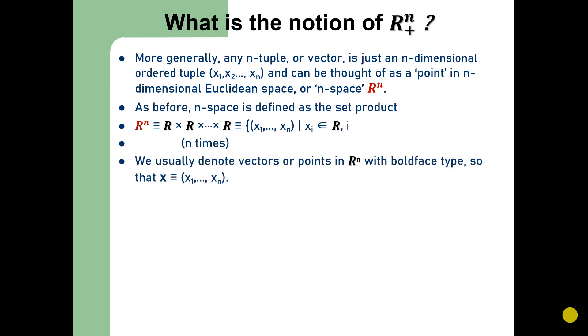We usually denote vectors or points in R^n with boldface type so that the vector x equals the n-tuple including quantities x₁, x₂, up to xₙ.